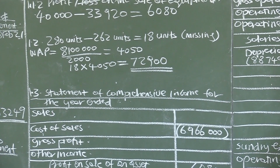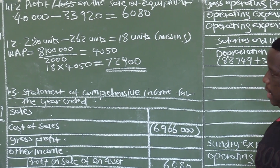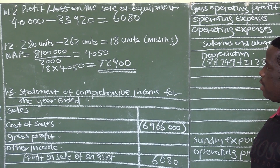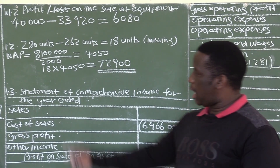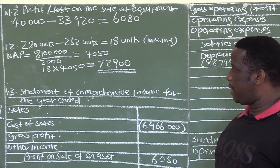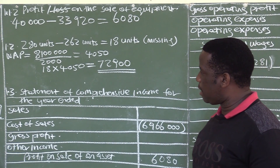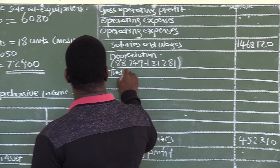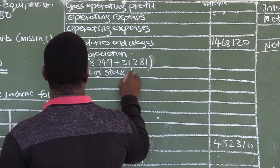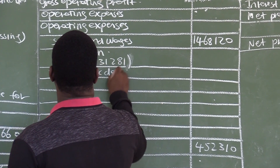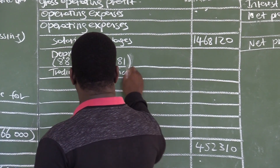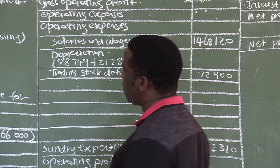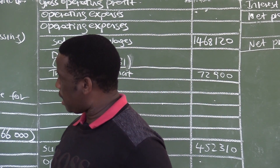We have 18 units that are missing. If you compare what we were expecting — 280 units — but the physical count revealed 262, which tells us 18 units are missing. The value of each unit according to the weighted average price is 4,050, and 18 multiplied by 4,050 gives 72,900. Remember, this is an expense transferred under operating expenses as trading stock deficit. The trading stock deficit is 72,900.